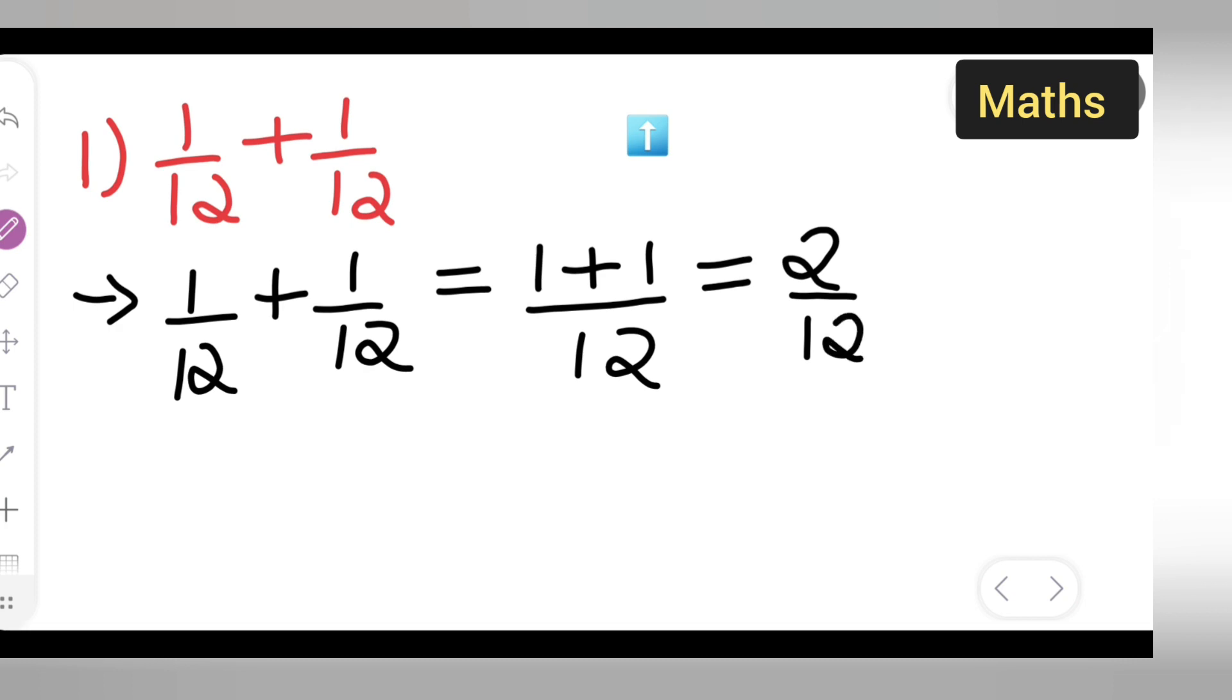Now cancel this term. 2 1's are 2, 2 6's are 12. So we will get 1 upon 6, right?